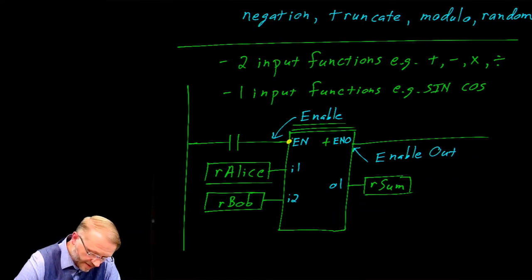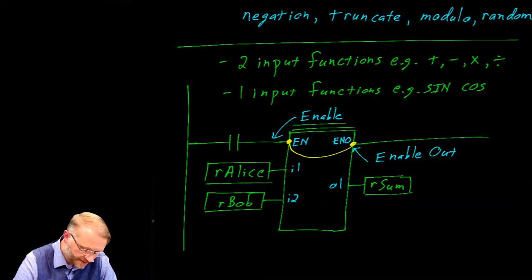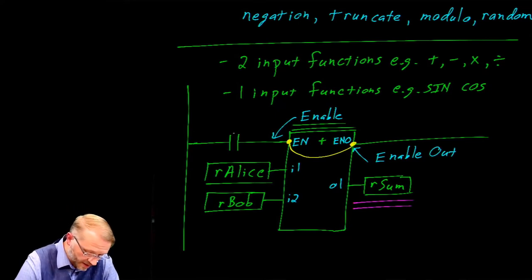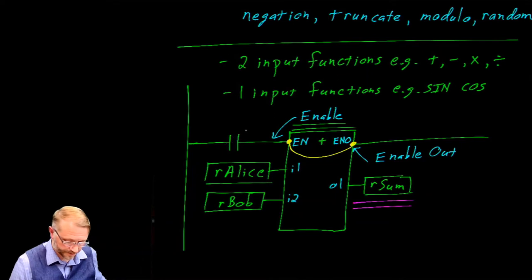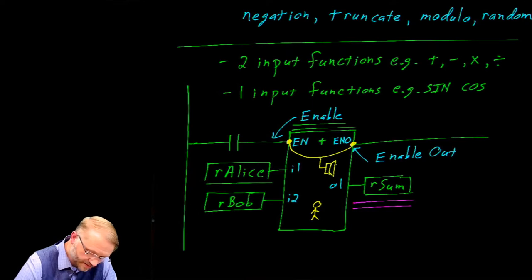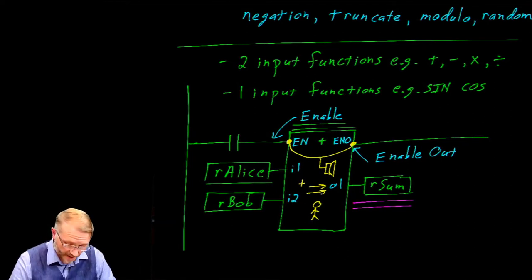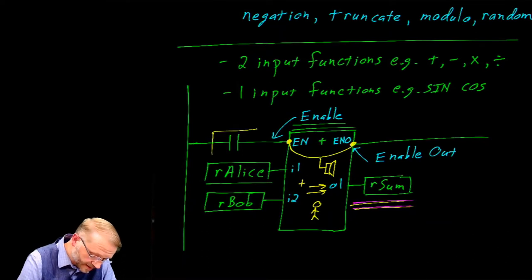There are a few things to bring to your attention. First, you could think of the enable out as a direct connection to enable — just think of it as a wire that goes right through the block. Whatever enable does, enable out will follow. The other thing is that this memory location is only updated when this rung evaluates as true. Think of it this way: inside we have a worker waiting for the alarm to go off. As soon as enable is activated, the worker will take the summation of these two and move it to the output. No enable means no work is done, so we will not write to rsum unless this block evaluates as true.